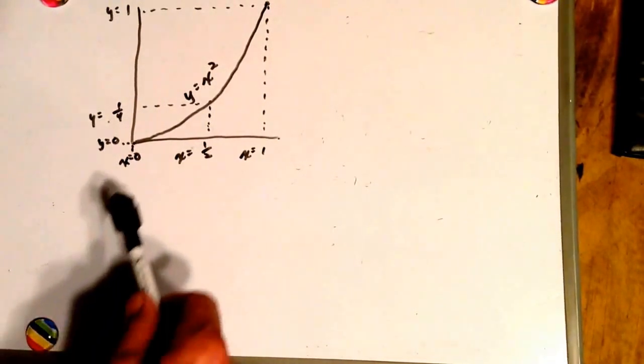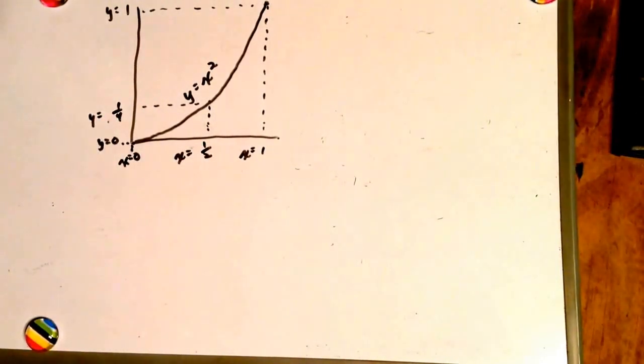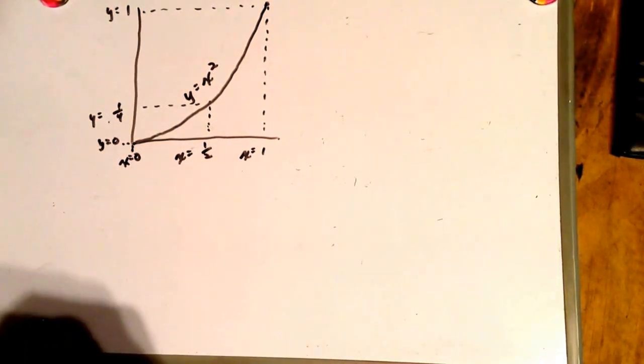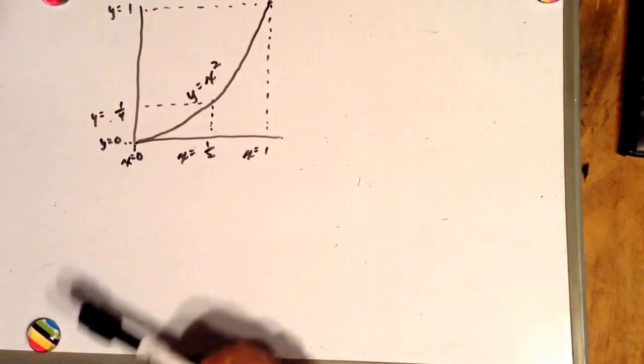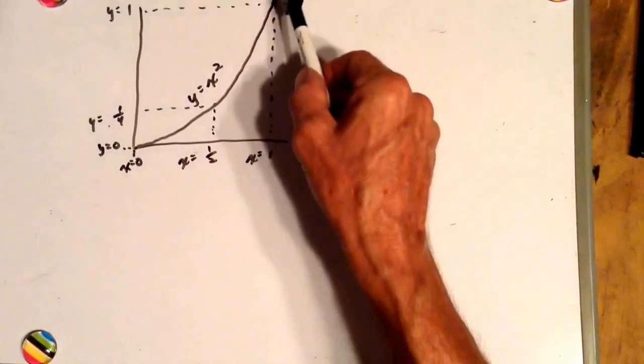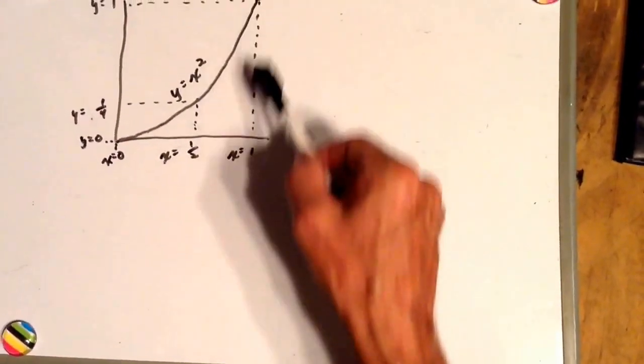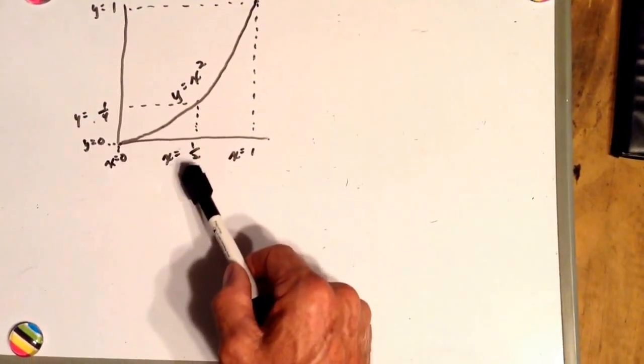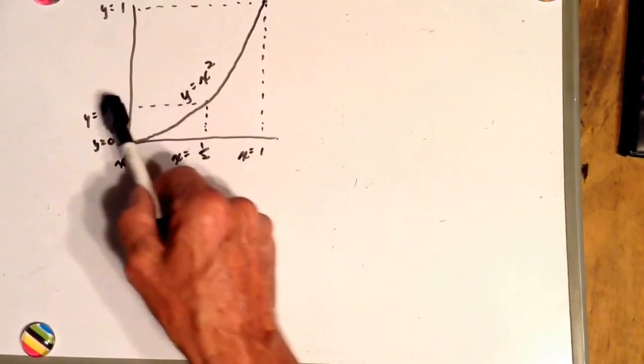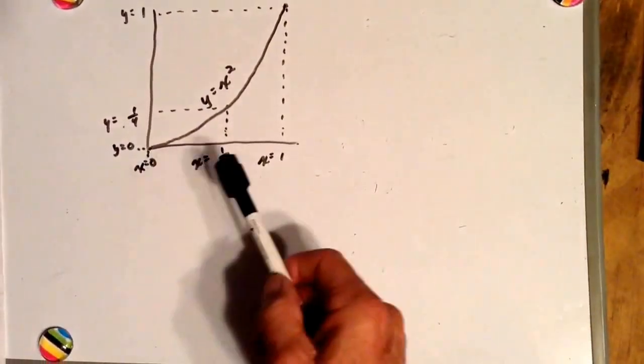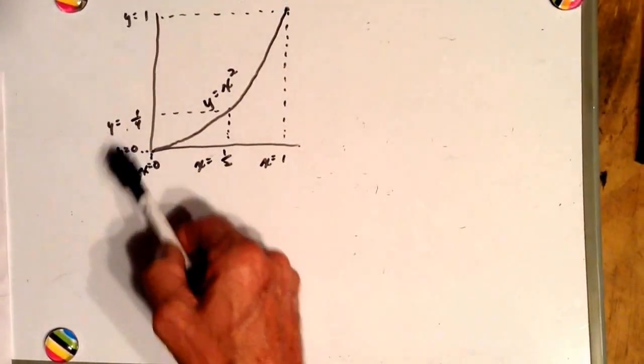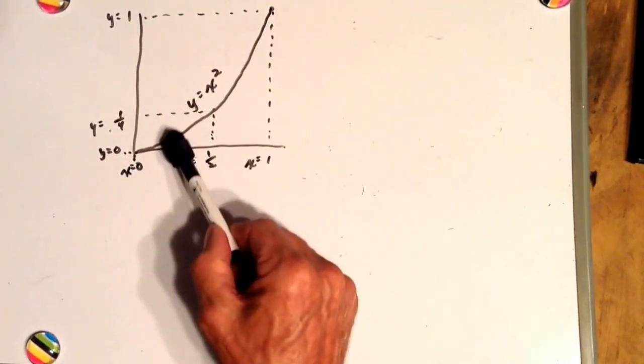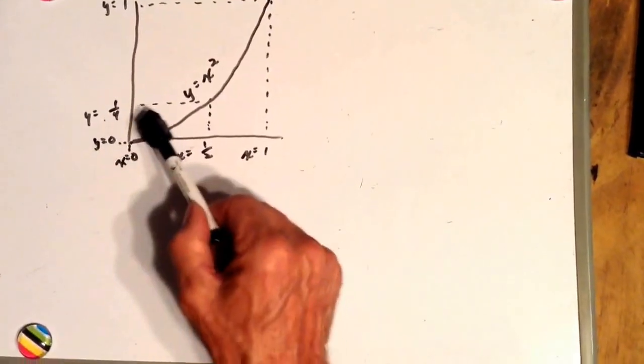Here's the curve y equals x squared. So let's figure out the area under this curve. First let's see what y equals x squared is. If x is one, well one squared is one. So y is one when x is one. If x is one half, y is one half squared, which is one half times one half, which would be one fourth. So there we have y equals one fourth. If x is zero, well zero times zero is zero. So y equals zero. What if x were halfway between here and there, it would be one fourth. So y would be one sixteenth.